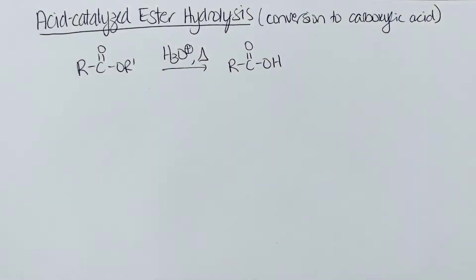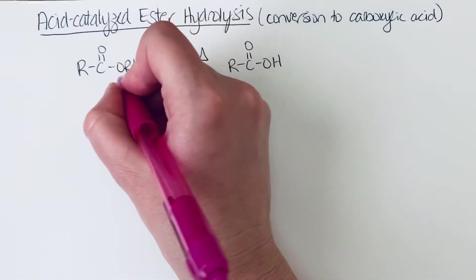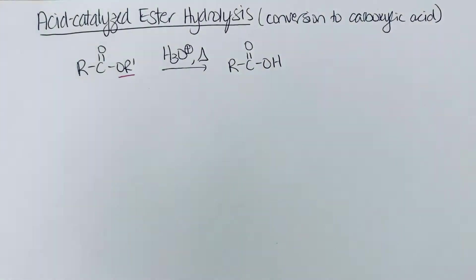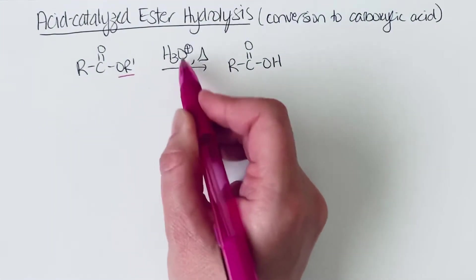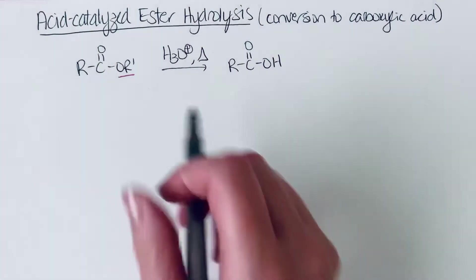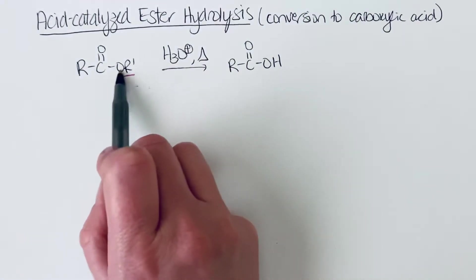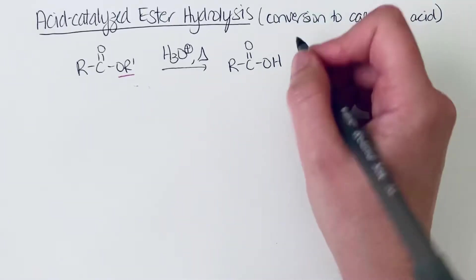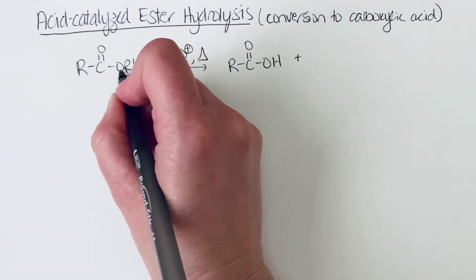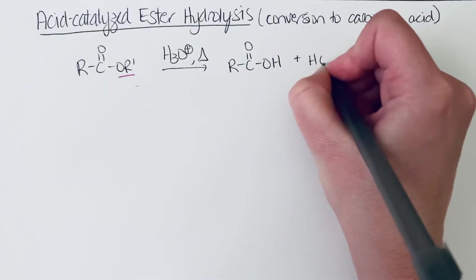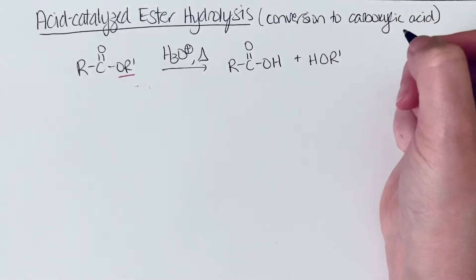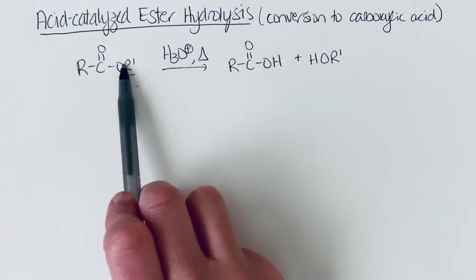So what we're doing is you're going to be losing this OR group as an alcohol, and you're replacing it with water that's coming from this aqueous acid solution. So the alcohol that you're going to generate as a byproduct depends on what the ester was that you started with. So it's going to be whatever R group was attached to that oxygen is going to be part of the alcohol that you make as a byproduct.